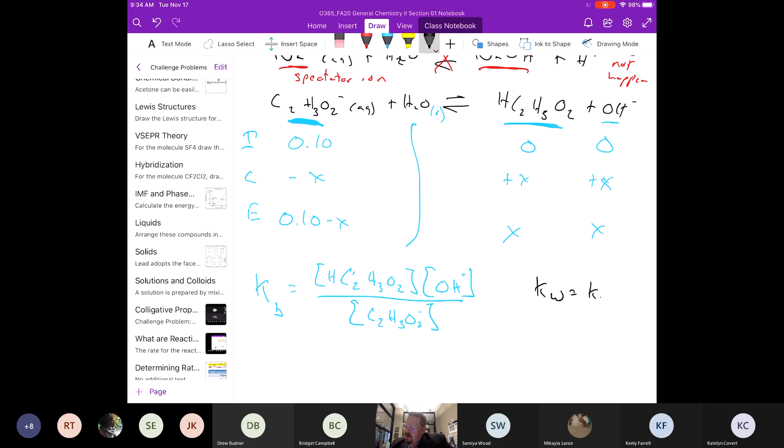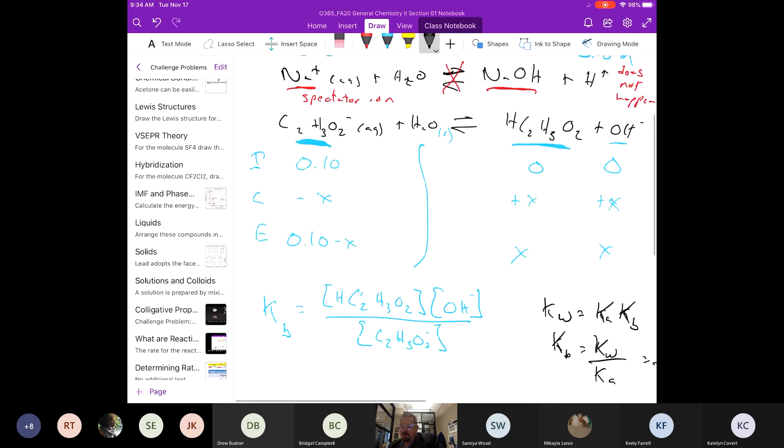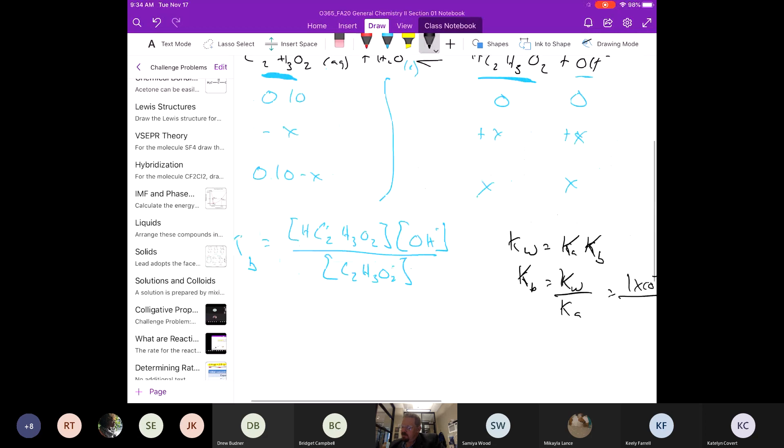Kw is equal to Ka times KB. So our KB then for this would be KW divided by Ka, which would be equal to 1 times 10 to the negative 14th, which is Kw, divided by the value we had for Ka, which was 1.8 times 10 to the minus 5.